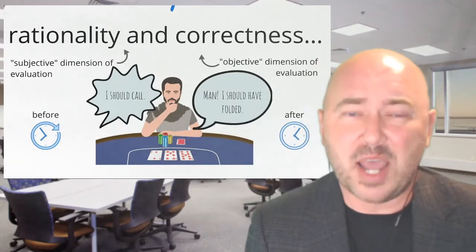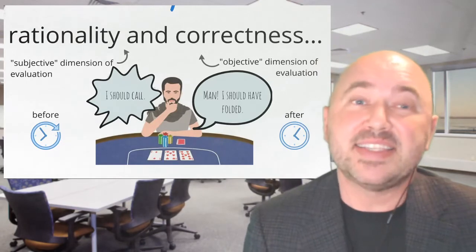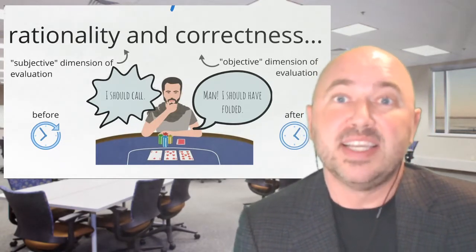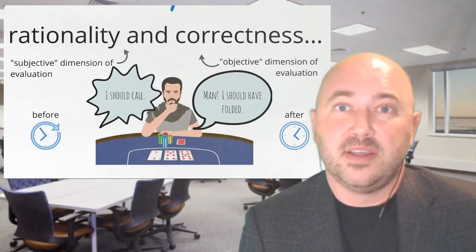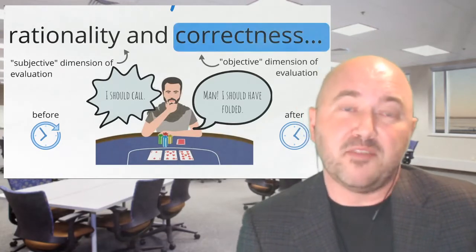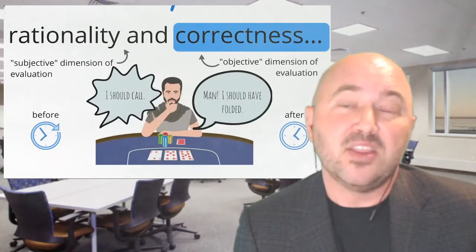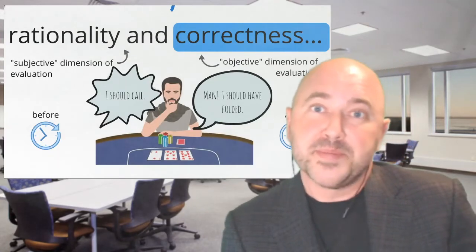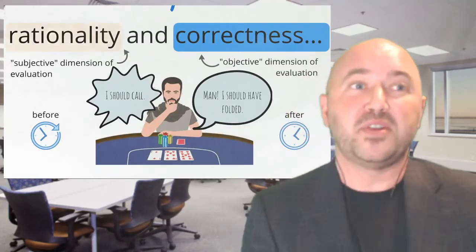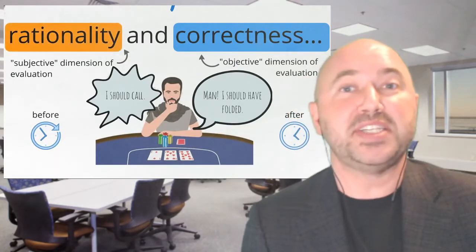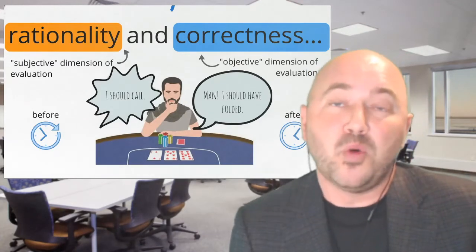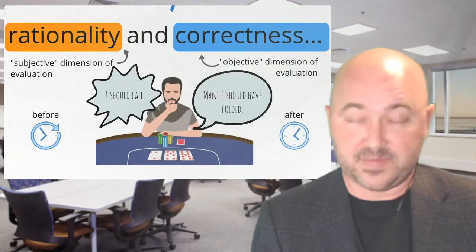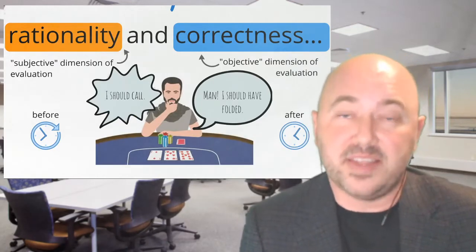Given what they know now, that's the thing for them to have done. And yet they steel themselves to make the same choice again in similar situations in the future. From this cool, backward-looking perspective, it looks like the thing that makes sense is to fold. And yet they still want, when they're in the forward-looking situation and don't know more, to do the rational thing.